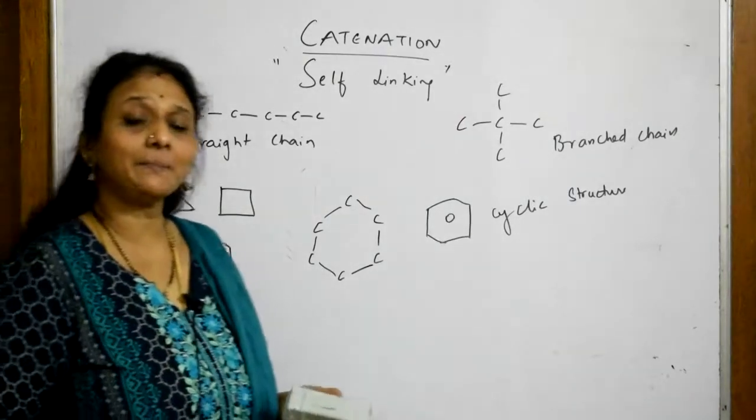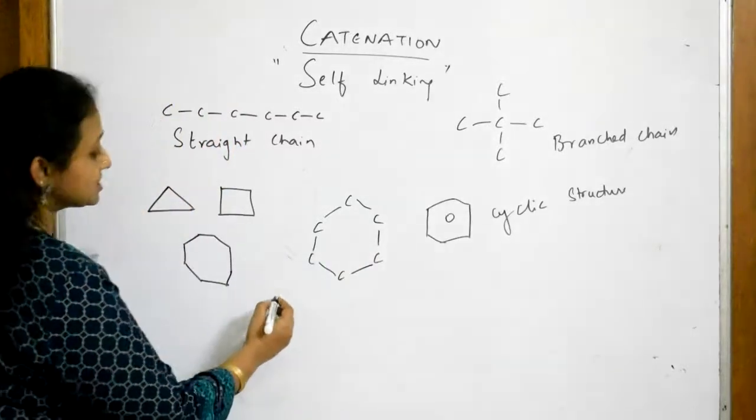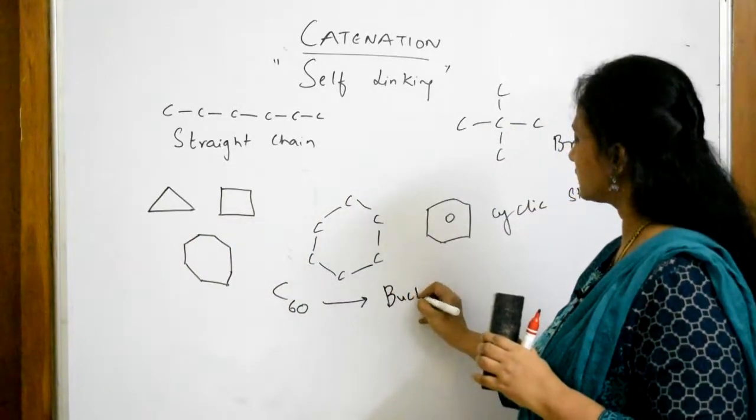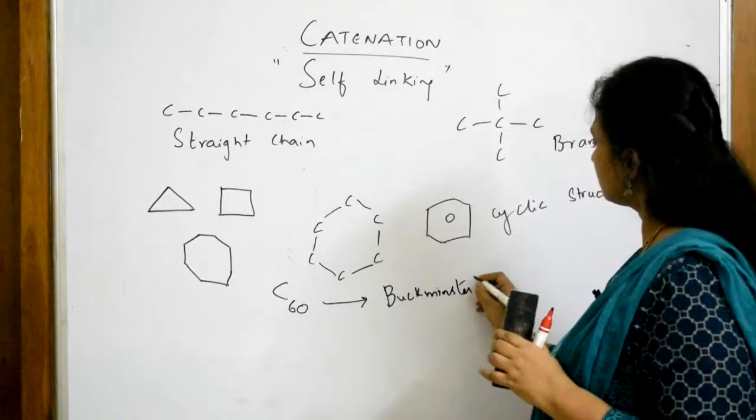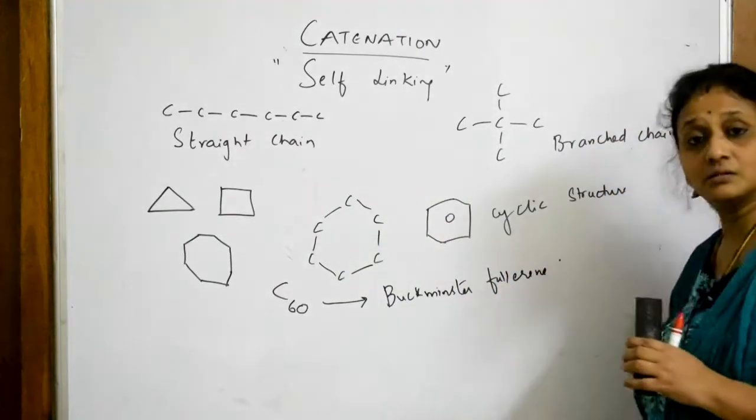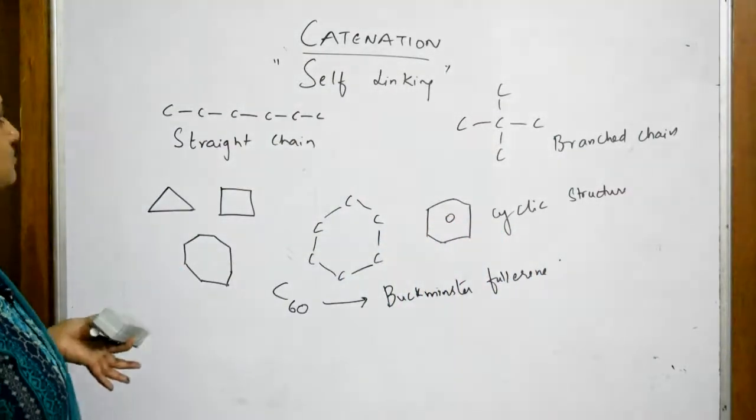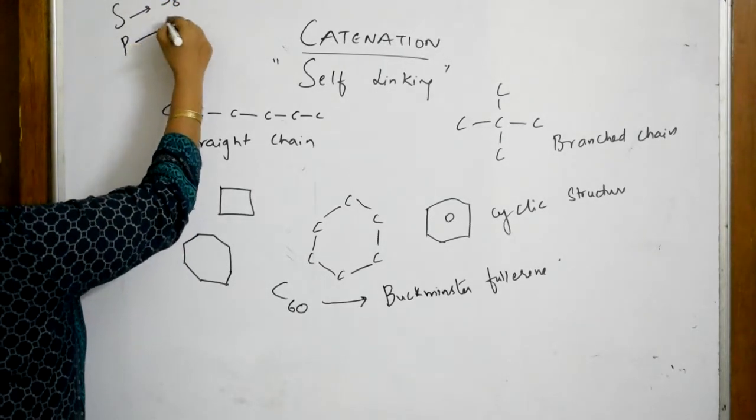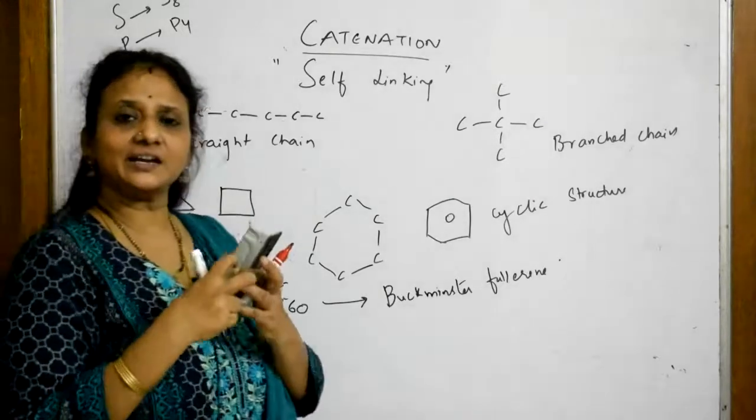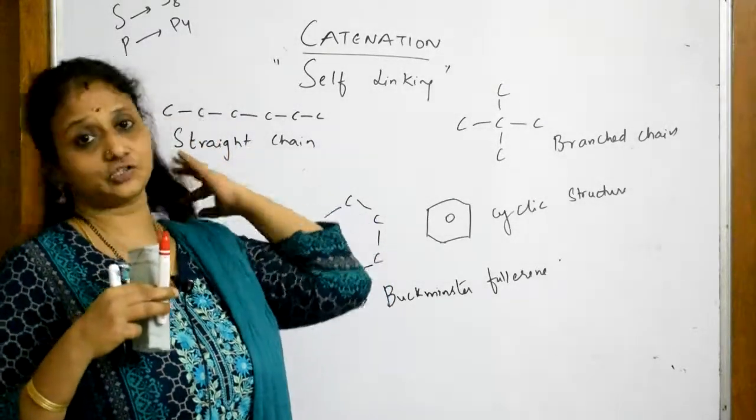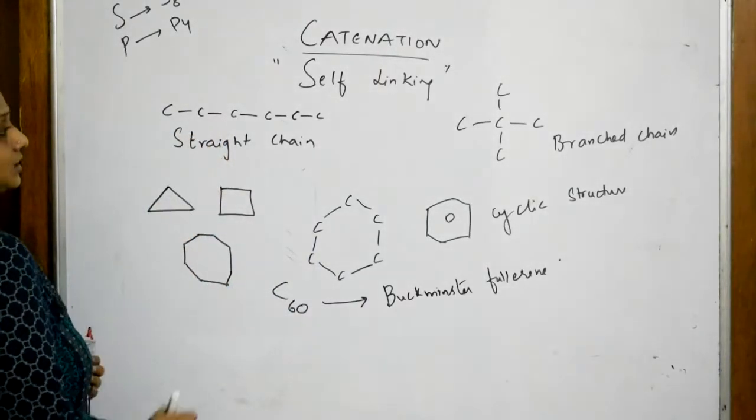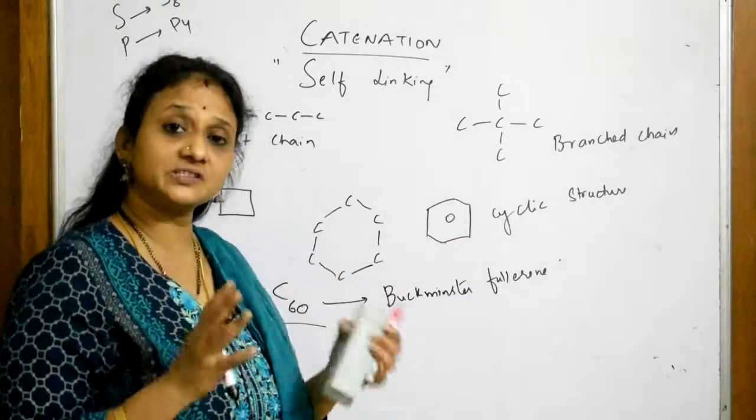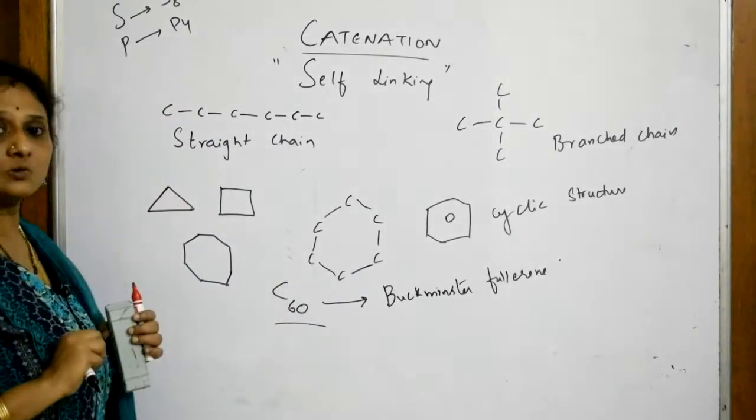It also has a capacity of forming 60 carbon atoms, that is C60. What is C60 compound called? It is called buckminster fullerene. There are different atoms like sulfur which also form catenation. Sulfur forms S8, phosphorus forms P4. Straight chain, branched chain, cyclic structures - it forms a dome-shaped structure with 60 carbon atoms and cyclo compounds.